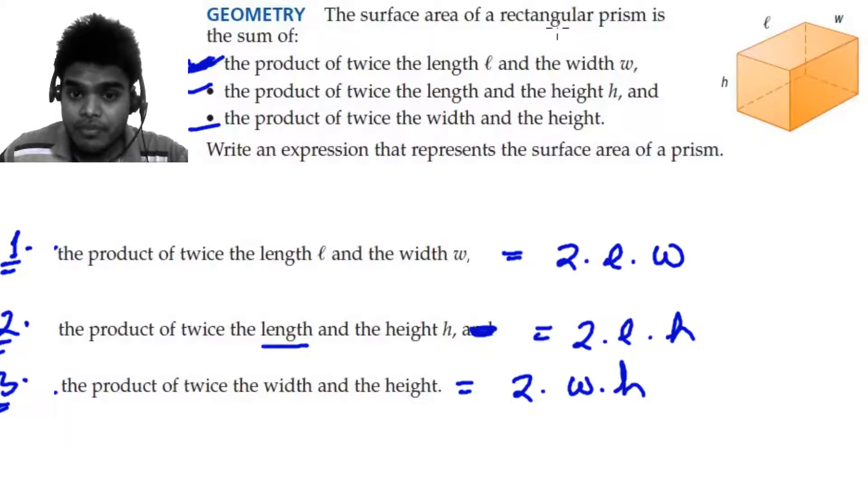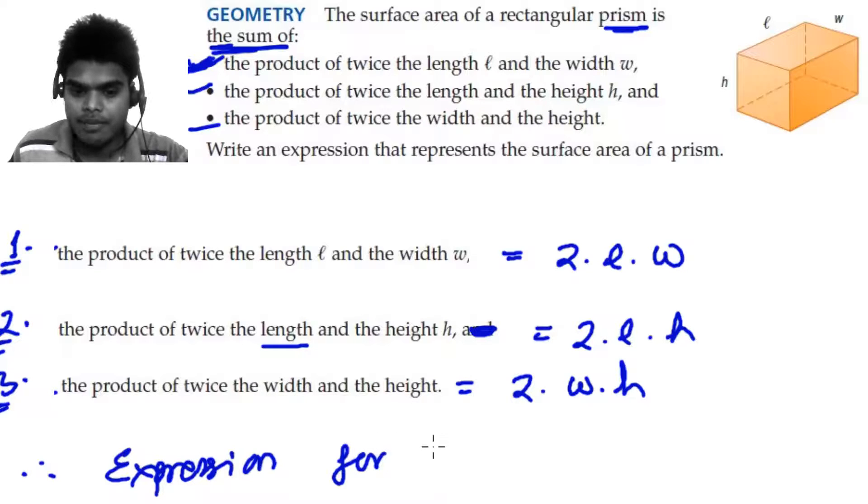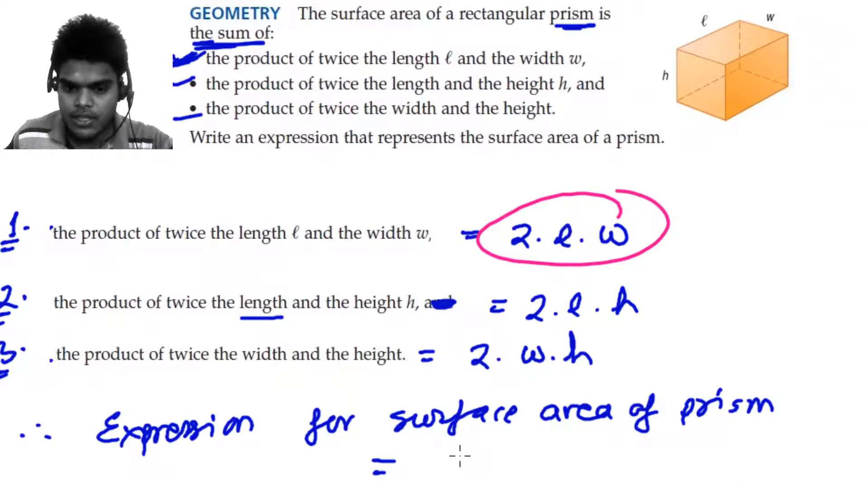And as the question is saying, the surface area of the rectangular prism is the sum of this. So therefore we're going to add everything. The expression for surface area of the prism equals - we have to add everything. First, let's do that.